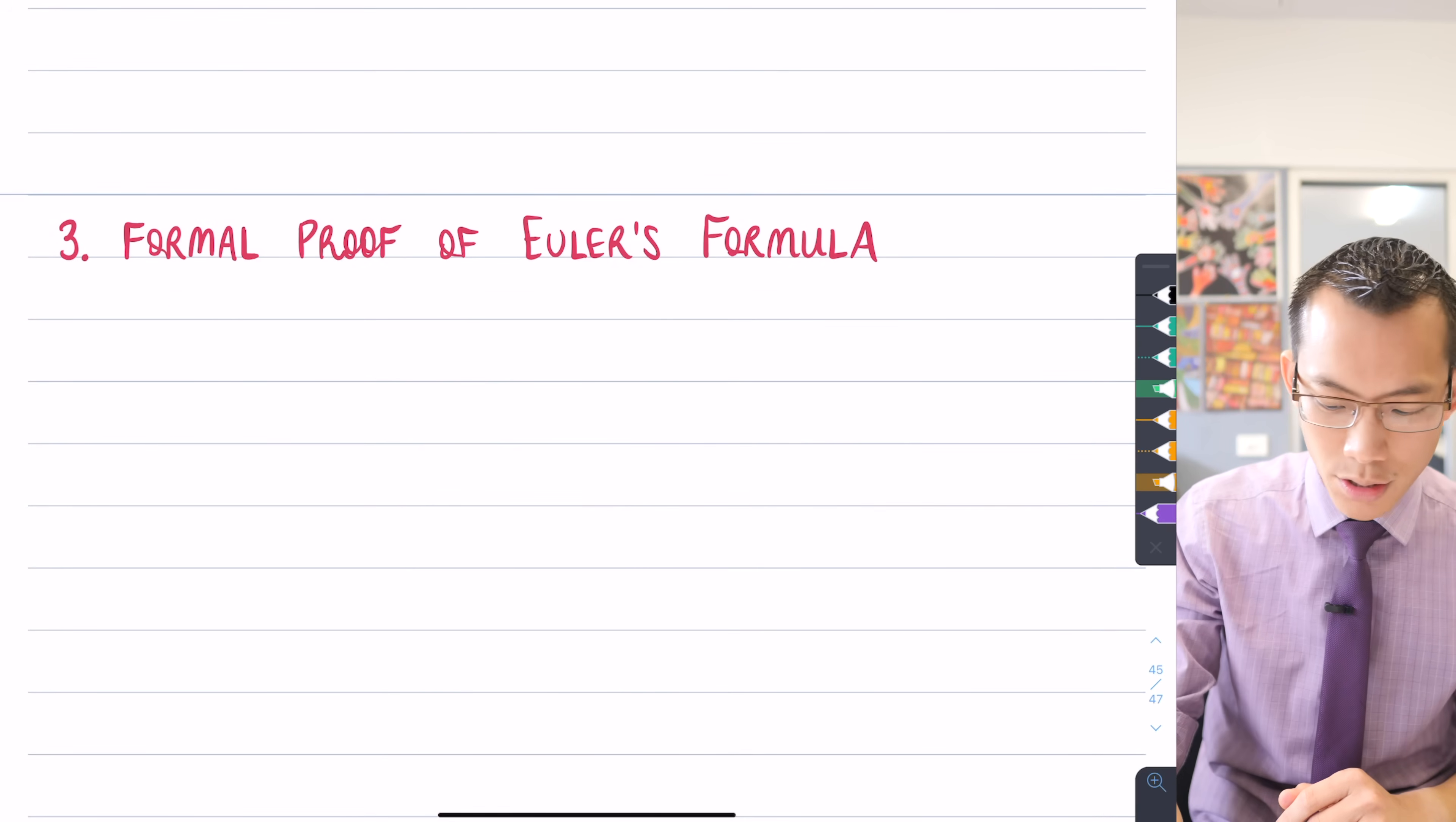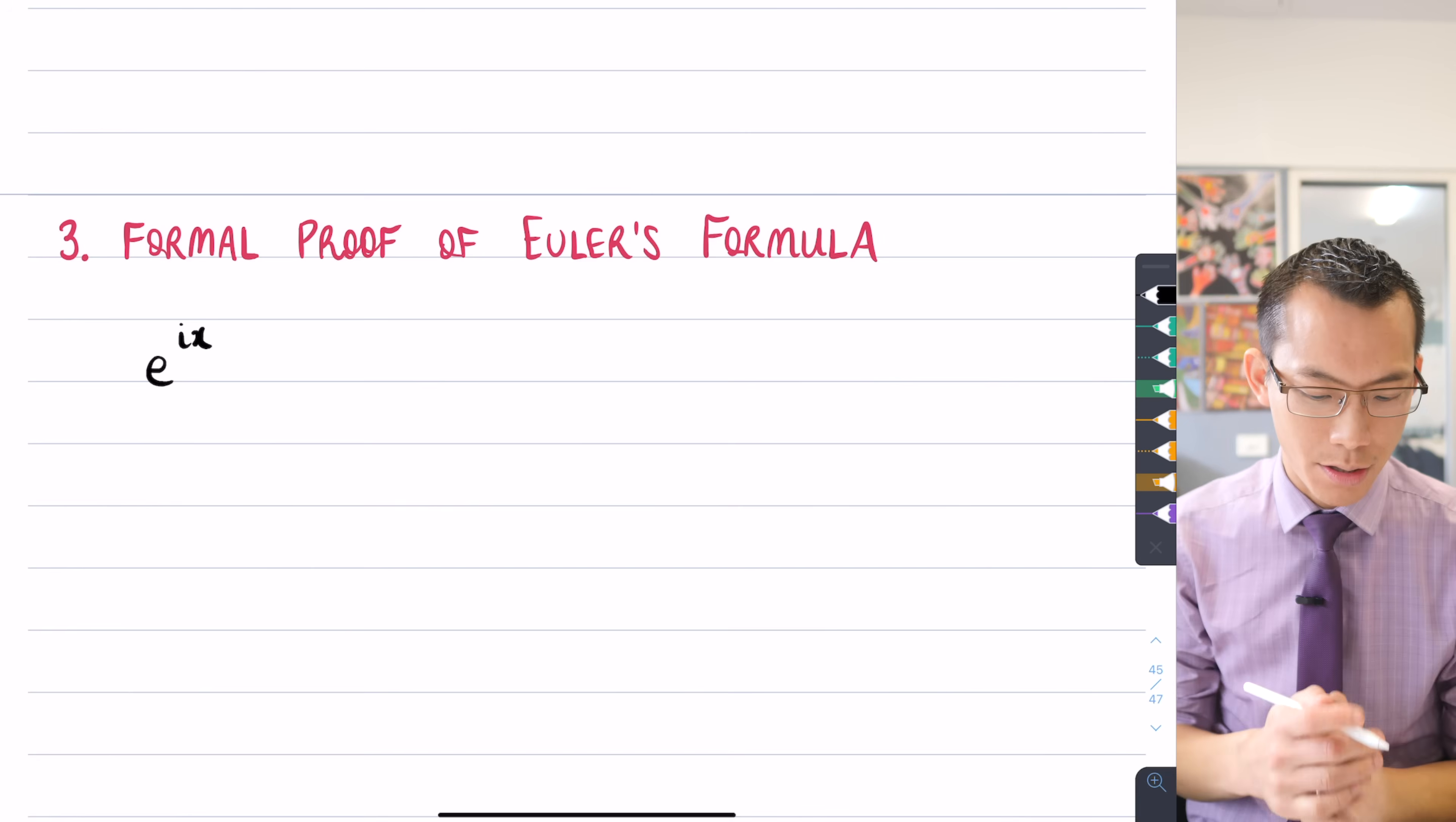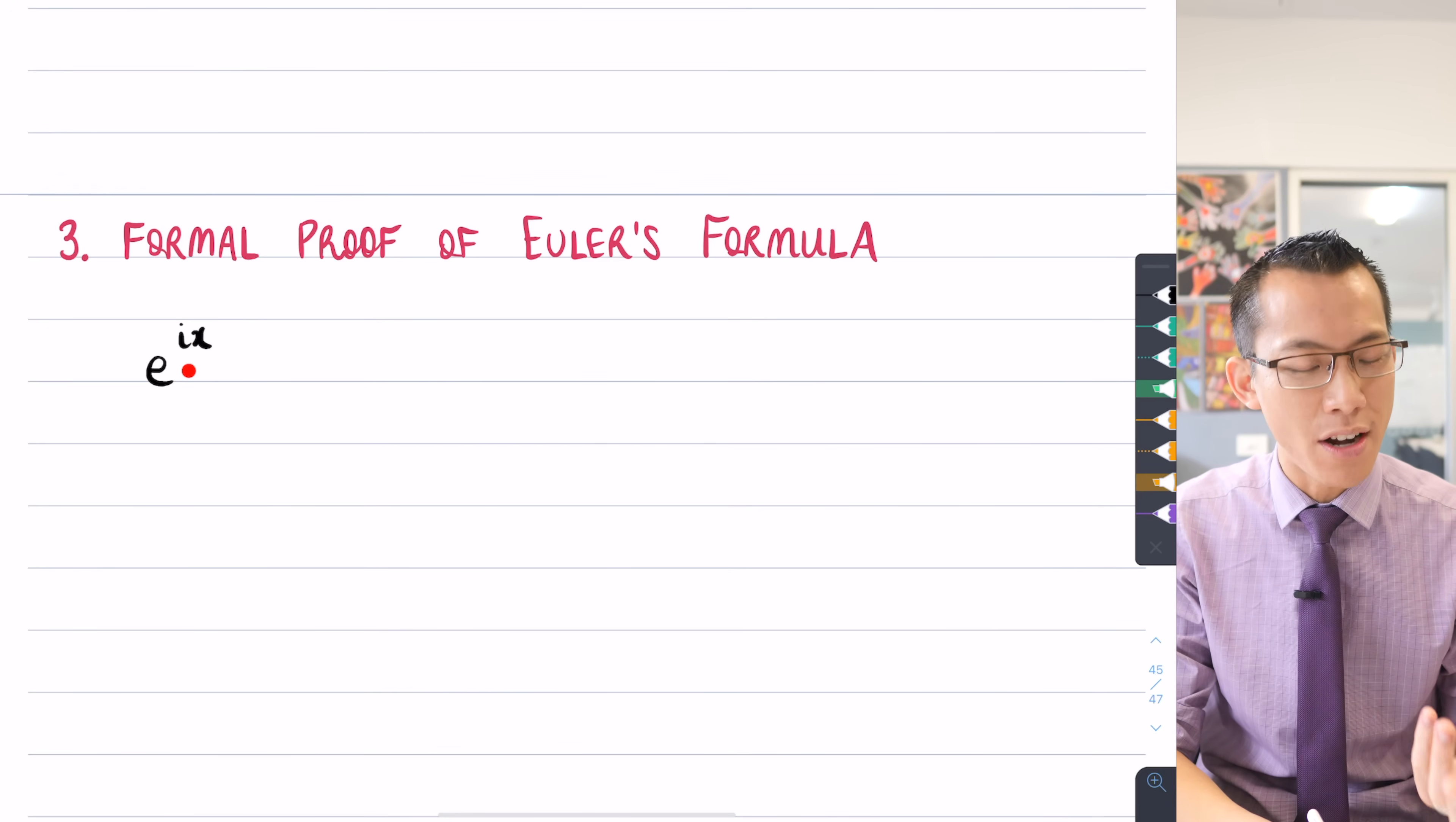Euler's formula, you might recall, starts with this expression on the left-hand side, e to the power of ix. We've got the exponential base here, we've got some unknown x, it's a variable, and then we have the imaginary unit i.